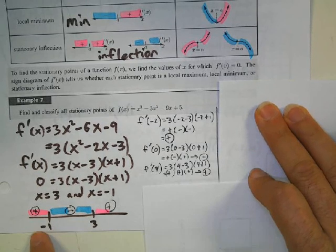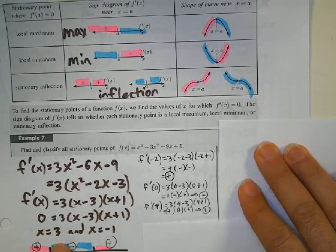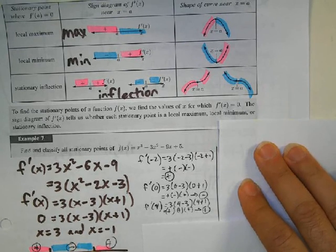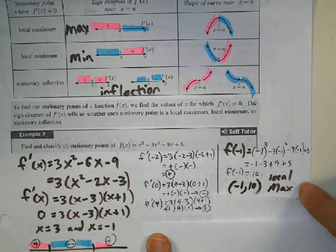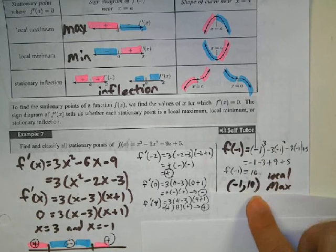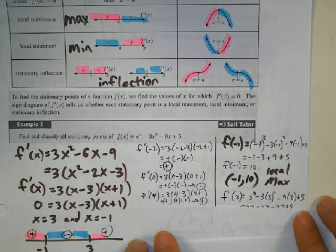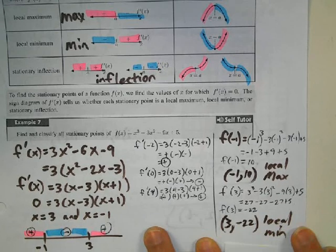At negative 1, the function goes up then down — like climbing to the top of a mountain — so that's a maximum. At x equals 3, it goes down then up — the bottom of a valley — so that's a minimum. Plugging negative 1 into the original function gives 10, so the local maximum is at (negative 1, 10). Plugging in 3 gives negative 22, so the local minimum is at (3, negative 22).